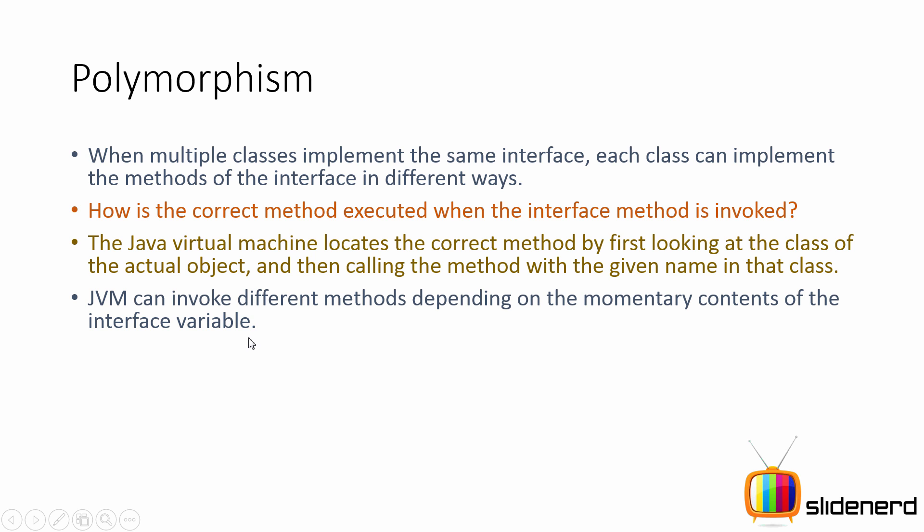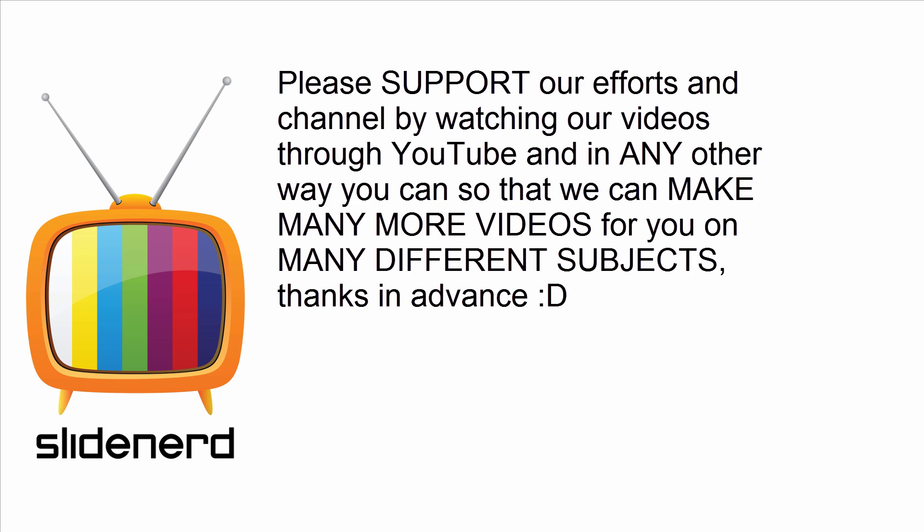So depending on the momentary contents of the interface variable, JVM can invoke different methods. That's the true polymorphism discussion, which we also did back in our inheritance videos.